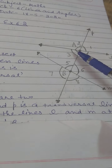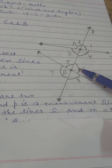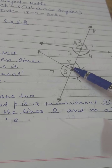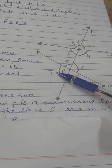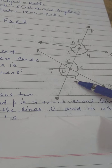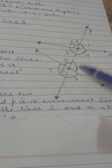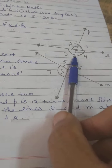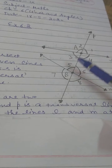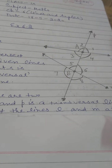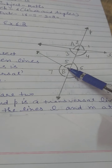Alternate interior angles: angle 3 and angle 6 are alternate interior angles, and angle 4 and angle 5 are alternate interior angles. Alternate exterior angles: angle 1 and angle 7 are alternate exterior angles, and angle 2 and angle 8 are alternate exterior angles. Interior angles on the same side: angle 4 and angle 6, and angle 3 and angle 5 are interior angles on the same side, also called consecutive angles.